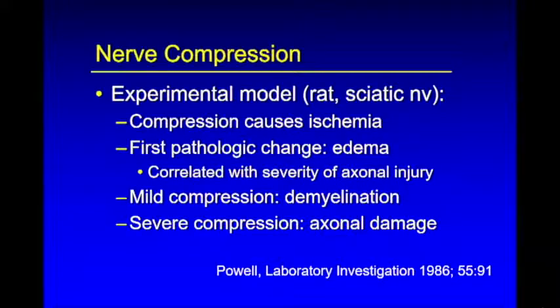This talk is less than 30 minutes, so I'm going to focus on one area of peripheral nerves: entrapment neuropathies. That's probably the most common reason ultrasound is performed when looking at nerves. We heard earlier about peripheral nerve tumors, so I won't be talking about that. What happens to a nerve when it's compressed?